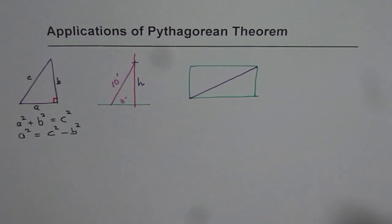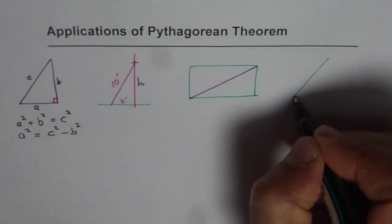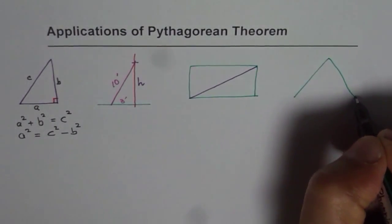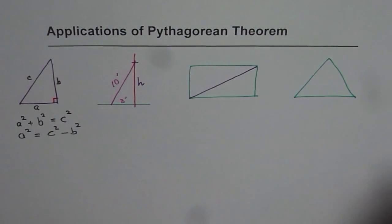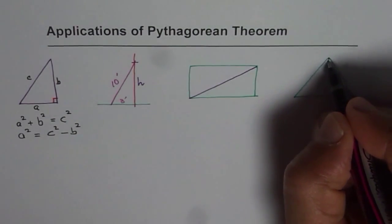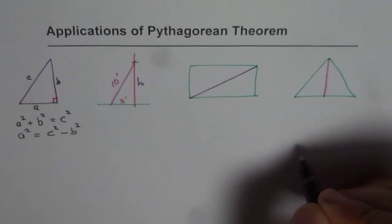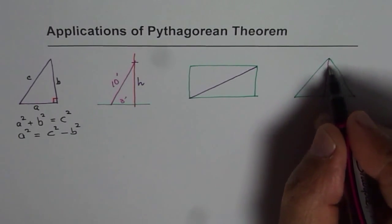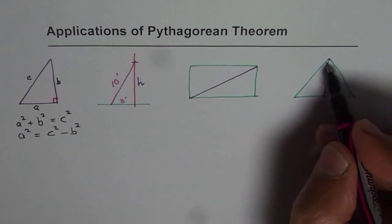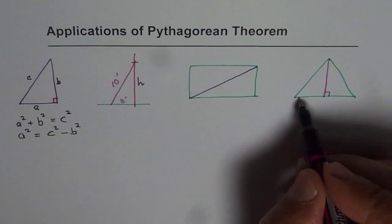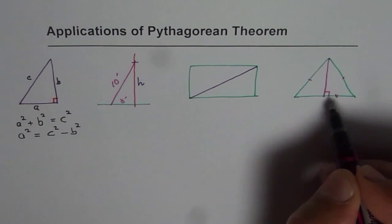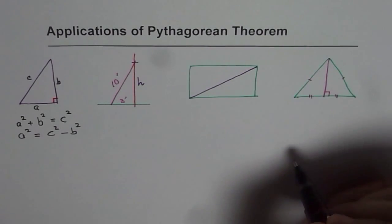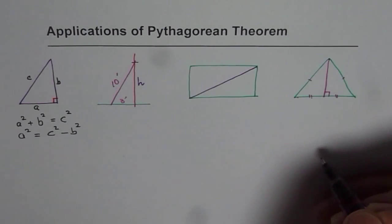We could also have questions based on triangles. Where if we have an equilateral triangle of known side, then we can find its area. Since altitude or the height of the triangle will be perpendicular to the base, knowing the sides we can find the height and then the area.